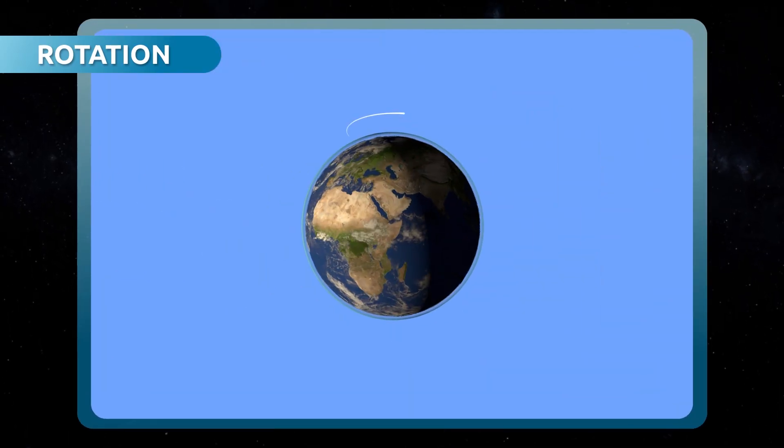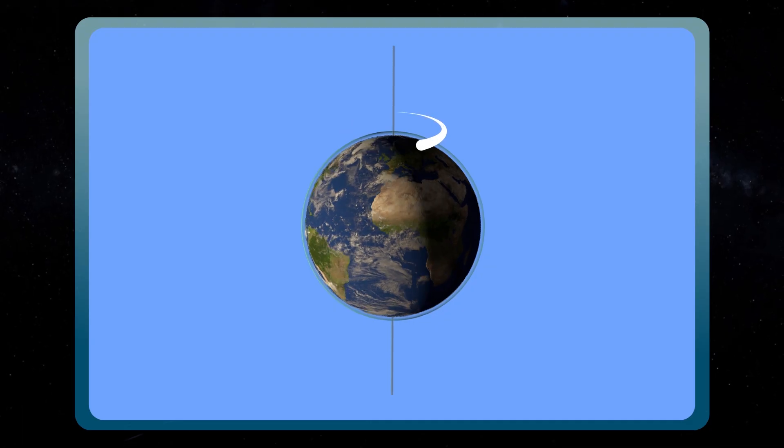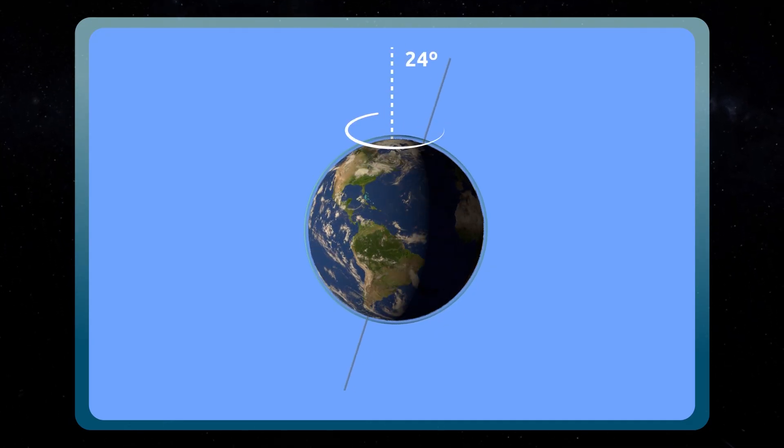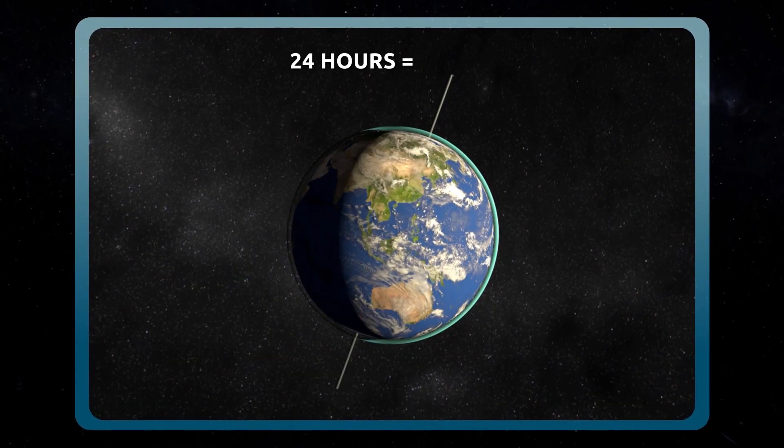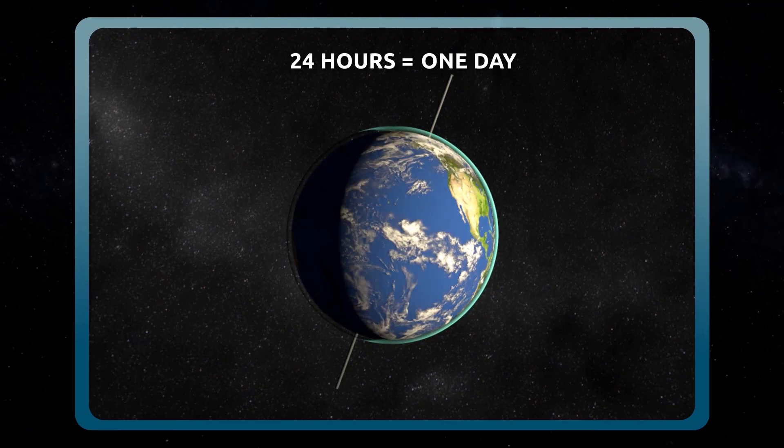The Earth spins around an imaginary line which passes through the poles. If you look closely, you'll notice that the axis is a little inclined, almost 24 degrees. It takes planet Earth 24 hours to complete one rotation on its axis, which is the equivalent of one day.